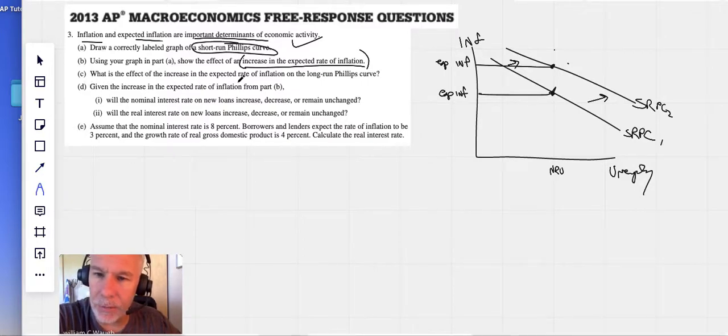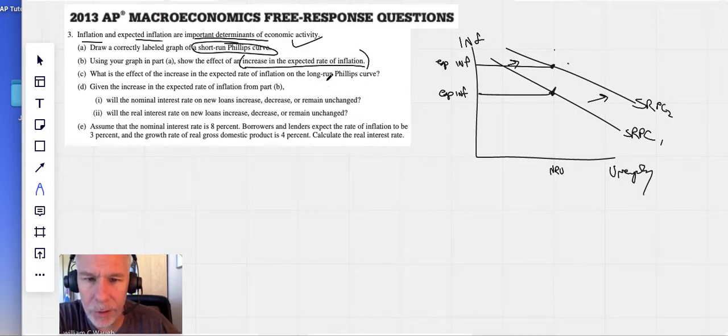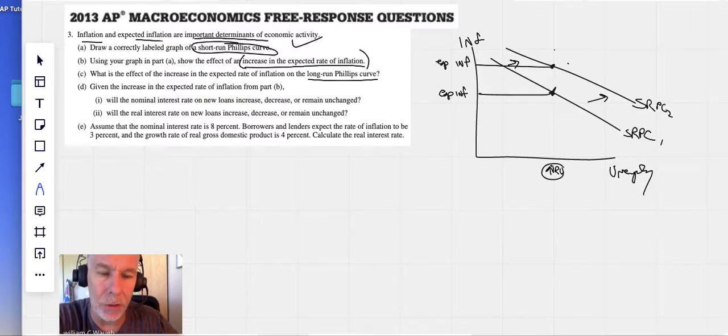What is the effect of the increase in the expected rate of inflation on the long run Phillips curve? We don't even need the long run Phillips curve. If it had been there, it would not have changed at all. So there is no change or no effect. No effect on the long run. This is just a short run effect.